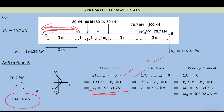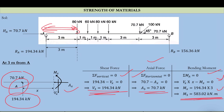For axial force, taking summation of horizontal forces = 0, AX = 70.7 kN, since only one force is there to balance it. For bending moment, taking moment about point A: since the axial force passes through A (distance = 0), only VX contributes. So MX = VX × x = 194.34 × 3 = 583.02 kN·m.